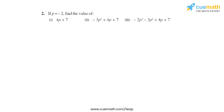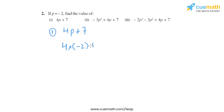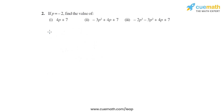In the first part, the expression given is 4p + 7. Putting p = -2, it becomes 4 into minus 2 plus 7. So 4 into minus 2 is minus 8, and minus 8 plus 7 gives us minus 1.